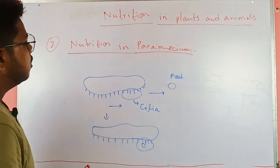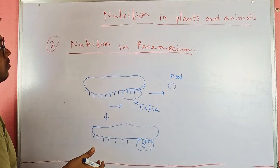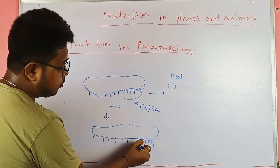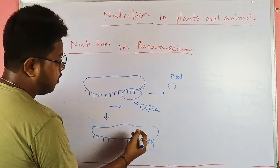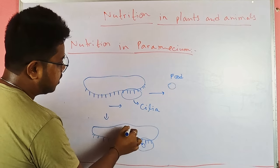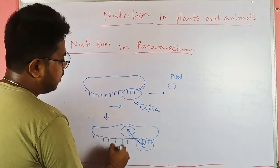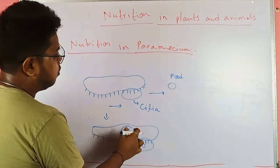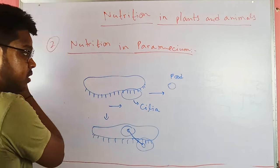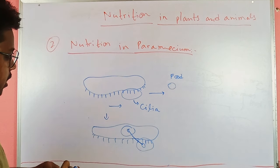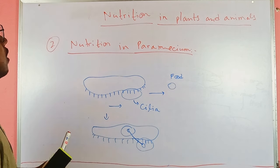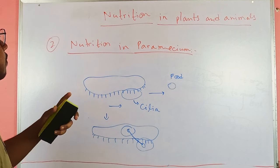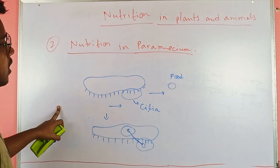After getting the food, paramecium transfers it to a particular chamber or portion of its body, then breaks down the food and assimilates the energy present in it. With this, the different modes of nutrition in plants and animals come to an end.